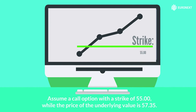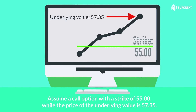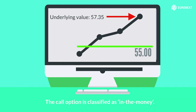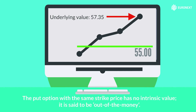Assume a call option with a strike of 55, while the price of the underlying value is 57.35. The option has an intrinsic value of 2.35, namely 57.35 minus 55. The call option is classified as in-the-money. The put option with the same strike price has no intrinsic value — it is said to be out-of-the-money.